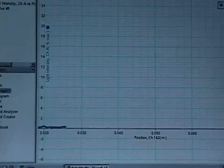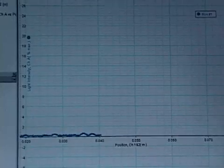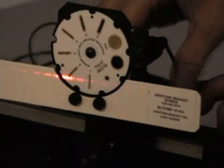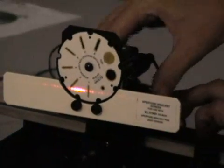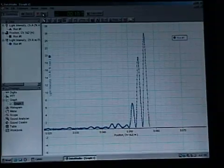All right, so we hit start on Data Studio, and then with the rotary motion sensor, slowly turn the dial. And there it is, we have a double slit diffraction pattern there.